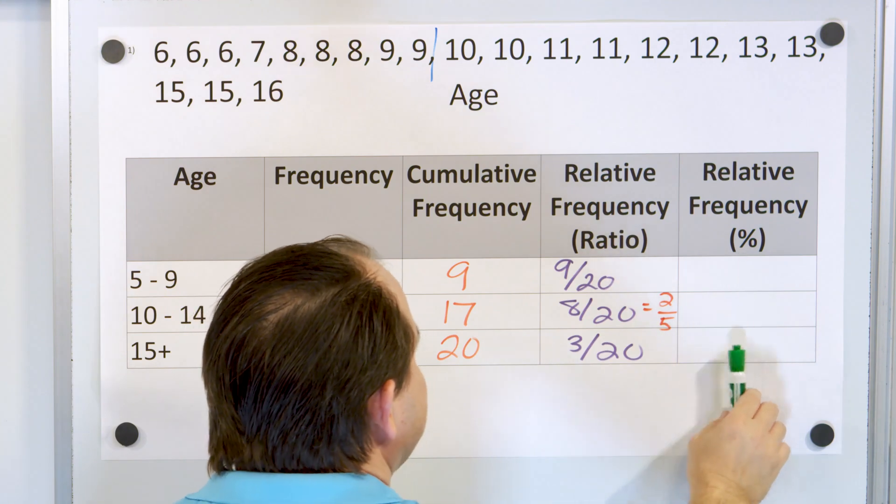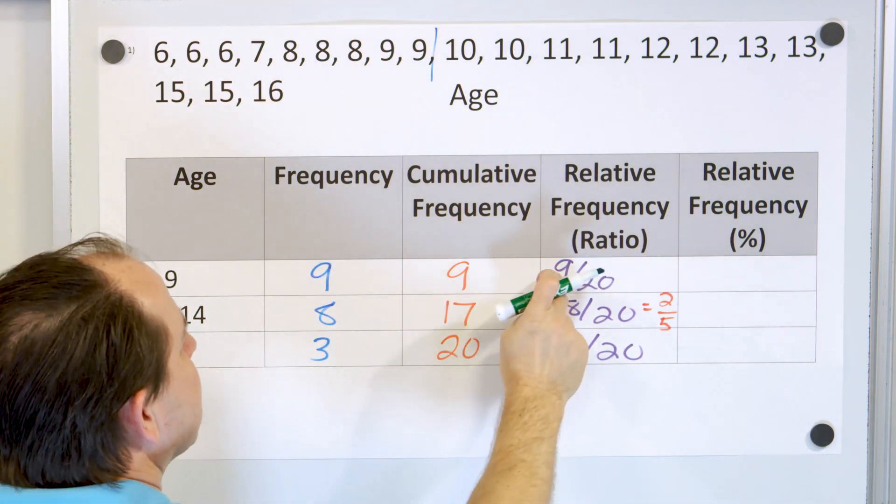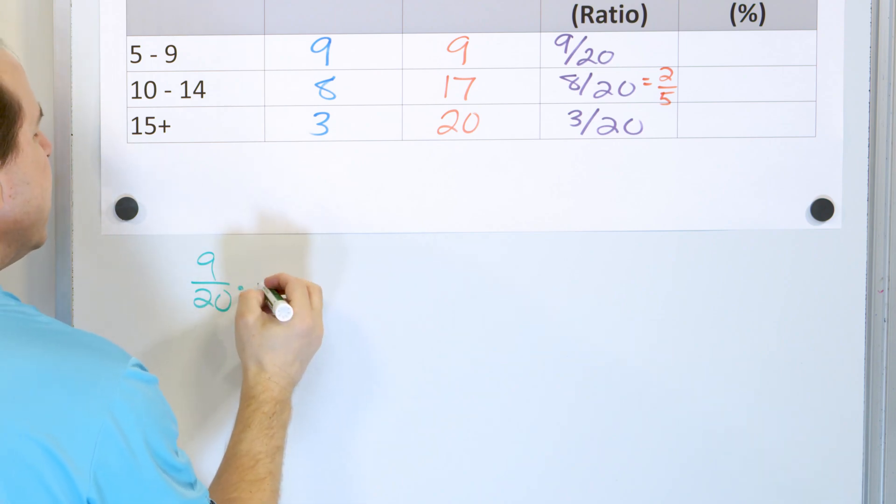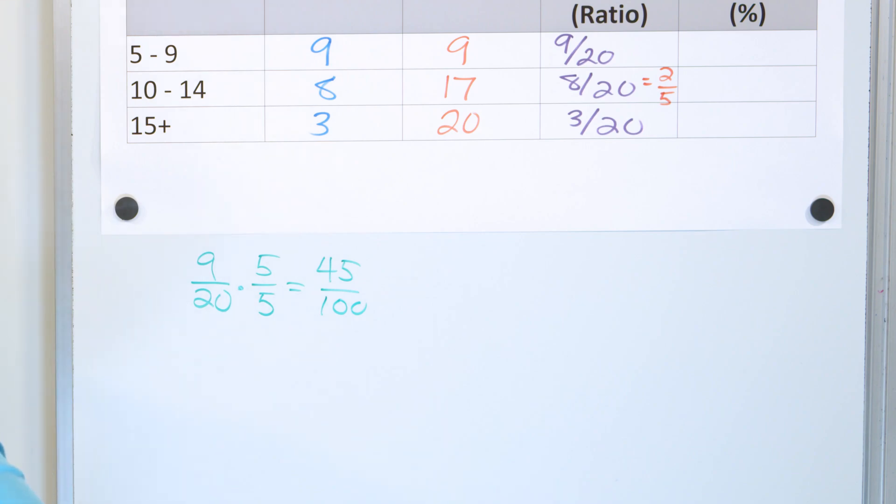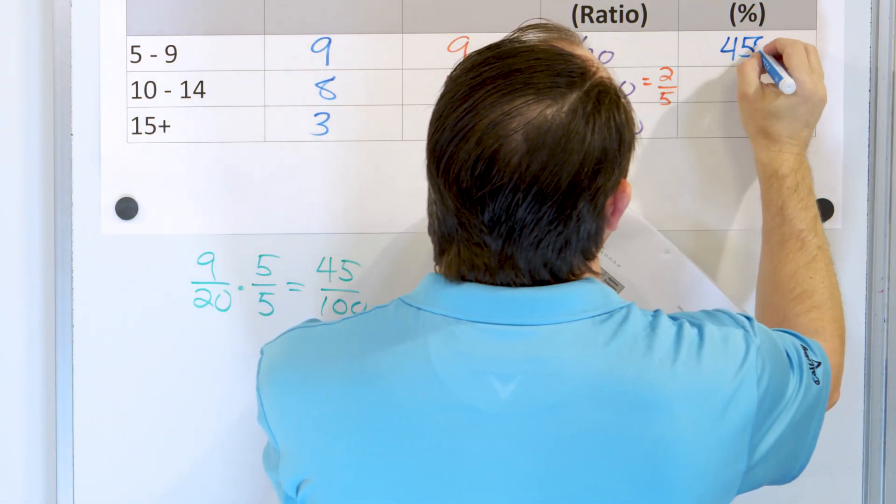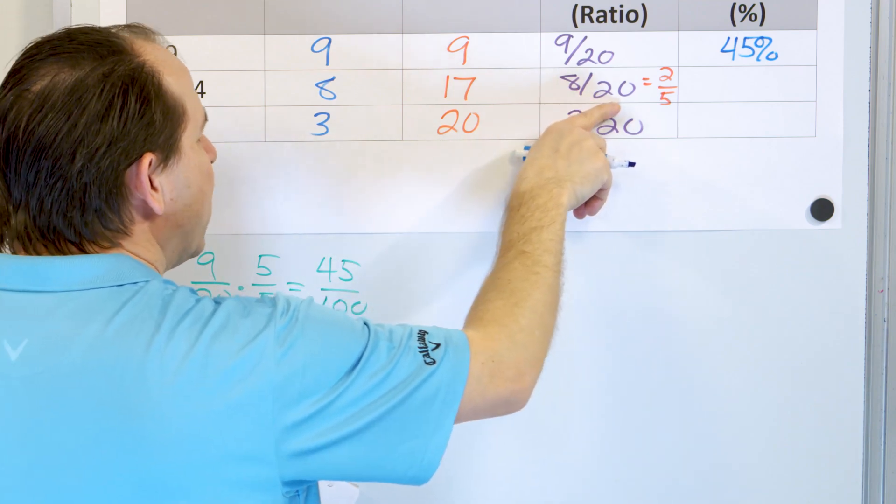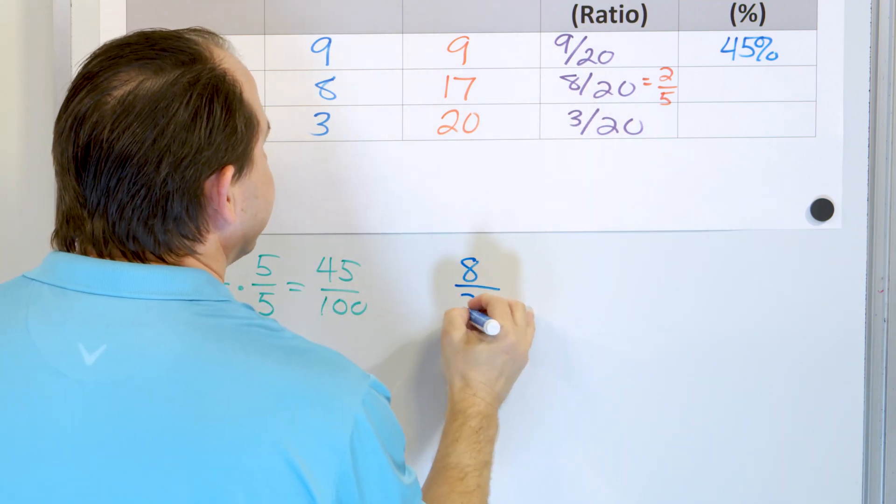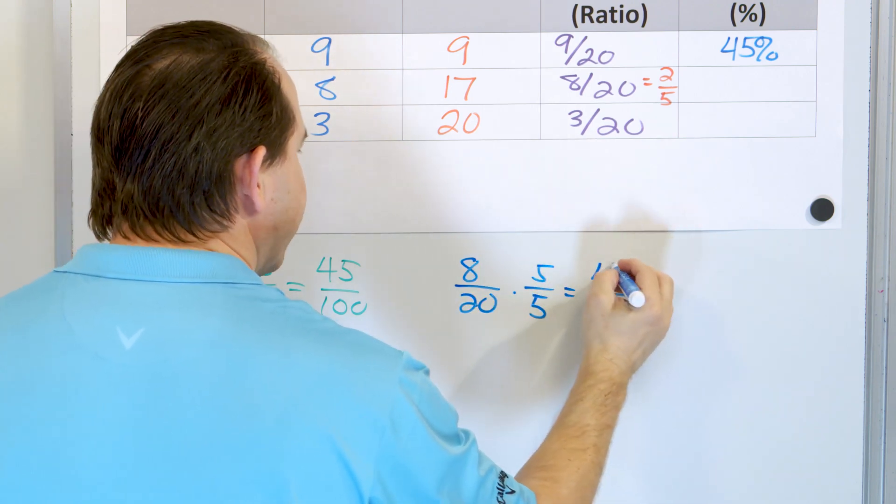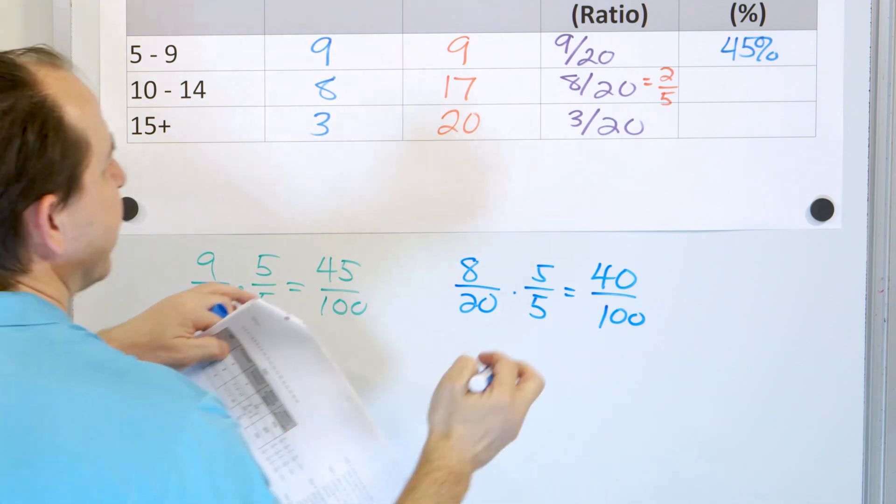Now, how do we get the percentage? What we do is we take the fraction 9 20ths and we change the denominator to 100. We have to multiply by 5 to do that. 9 times 5 is 45 and 20 times 5 is 100. And once you have it out of 100, then you can say that the percentage is 45%. Right? We do the same thing here. 8 out of 20, right? So 8 out of 20. We're going to multiply by 5 and what you get on the bottom is 100. When you get on the top is 40. So you get an answer of 40%.